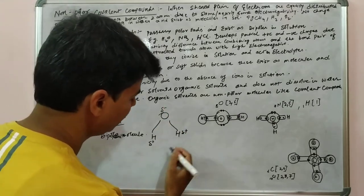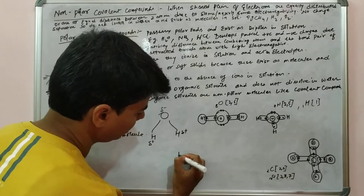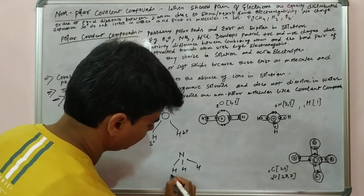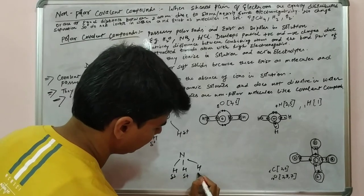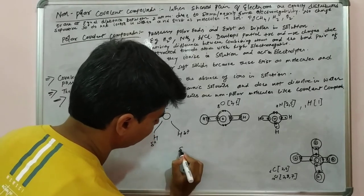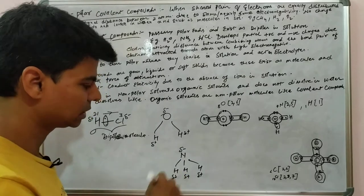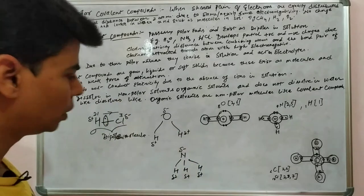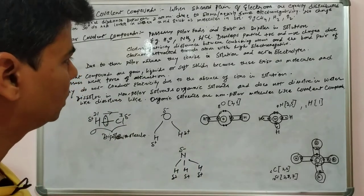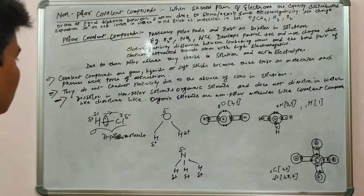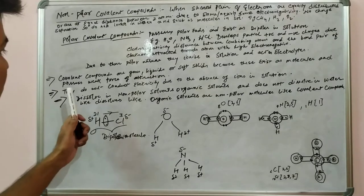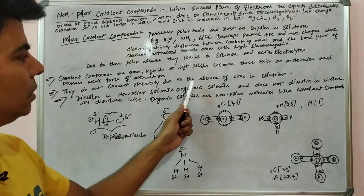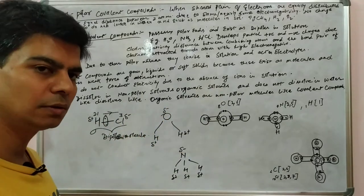Similarly in ammonia, all hydrogen atoms acquire a positive charge and nitrogen acquires a negative charge, so ammonia also exists as a dipole. All these — HCl, water, ammonia — are polar covalent compounds. One more point: non-polar covalent compounds do not conduct electricity due to the absence of ions in solution.